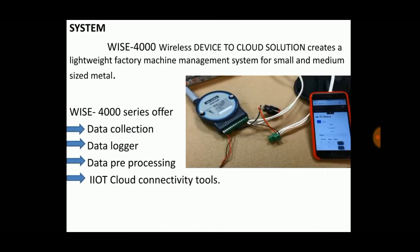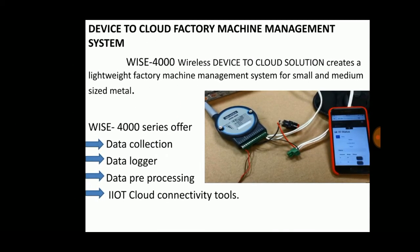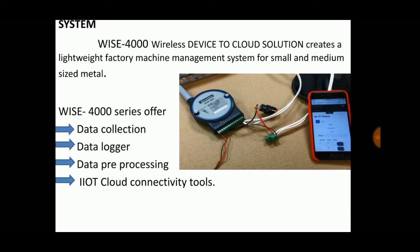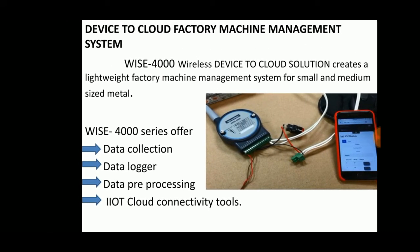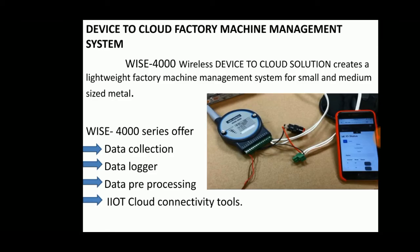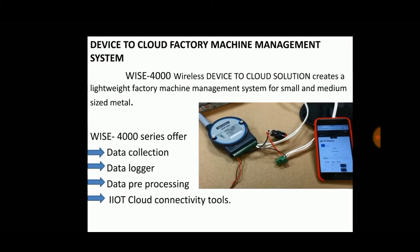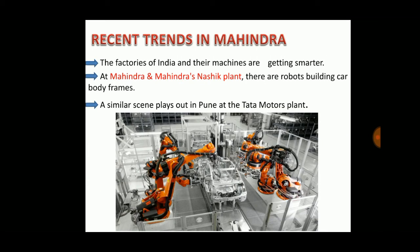The WISE 4000 is a wireless device-to-cloud factory machine management solution. It offers data collection, data logging, data pre-processing, and cloud connectivity tools. It is also a fact that Mahindra & Mahindra's Nashik plant uses robots for car assembly, and some Tata Motors plants in Pune also use robots for car building.